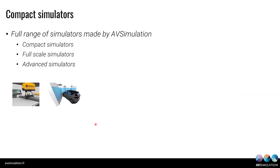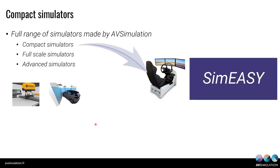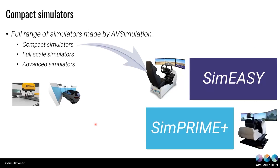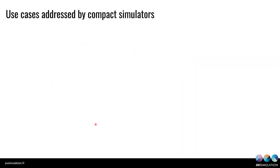Based on this, we have a range of simulators: compact, full scale, and advanced. Today we are focusing on one type of compact simulator covered by the SimEasy — we did a presentation about that a few weeks ago and will provide a link. The new one is SimPrime or SimPrime Plus — two models. I'm really going to focus on SimPrime Plus because that's the one I'm most excited about. It's a compact cockpit on a motion system.